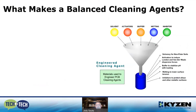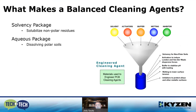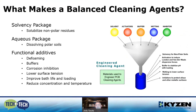What makes a balanced cleaning agent? There's a solvency package to solubilize non-polar residues and an aqueous package for dissolving polar soils. Functional additives help with foam control, buffers stabilize pH, corrosion inhibitors protect metals, and wetting agents lower surface tension — all improving bath life and loading. In some cases, you may be able to run at lower concentration and temperature.